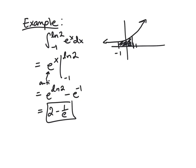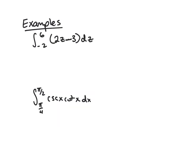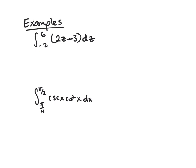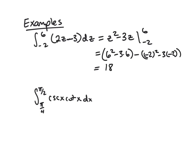Now another example using FTC part two. We just want an antiderivative - the plus C doesn't matter because it cancels. Here it's z^2 minus 3z, evaluating at -2 and 6. Plug in 6: 6^2 minus 3 times 6. Plug in -2: (-2)^2 minus 3 times (-2). This is 36 minus 18, so 18. This is 4 plus 6, so 10. 18 minus 10 is 8.